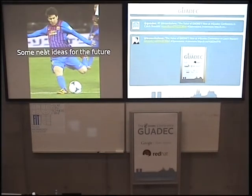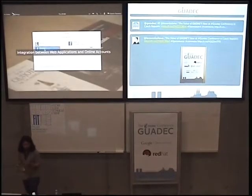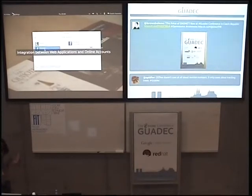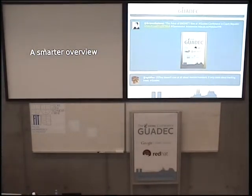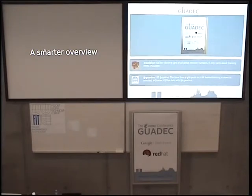We have some ideas of things we could do for the future, and your comments, feedback, and participation are very much encouraged. One thing I think would be really nice is to have online accounts integrated with web applications — for example, when you create your online account for Facebook, it could also create a web app that has Facebook, so you can use Facebook without having to log in again in the browser. The same could work for other services. Also, a smarter overview — we're using GTK and it's not as flexible as it could be. Considering we're a web browser with a web engine, it would be clever to use HTML and JavaScript. One of my colleagues is working on this idea.